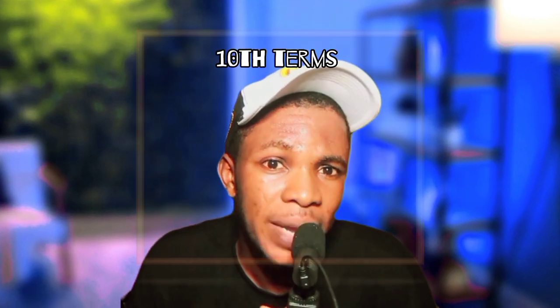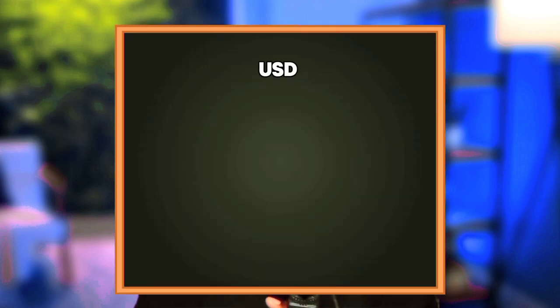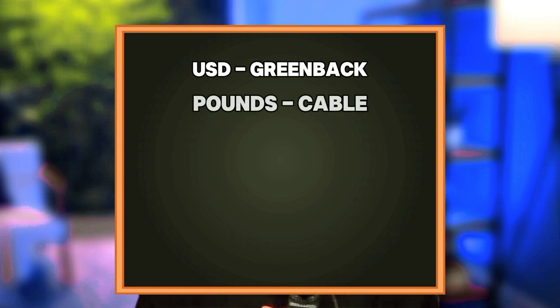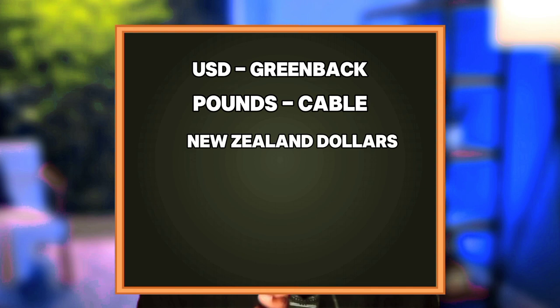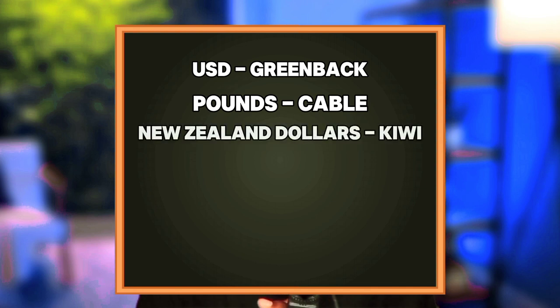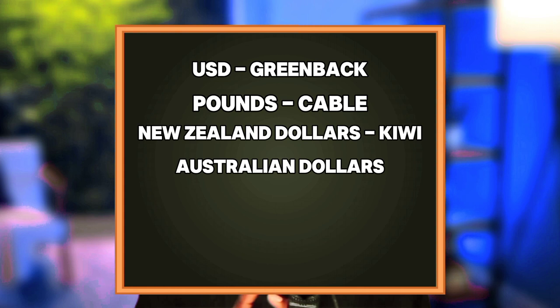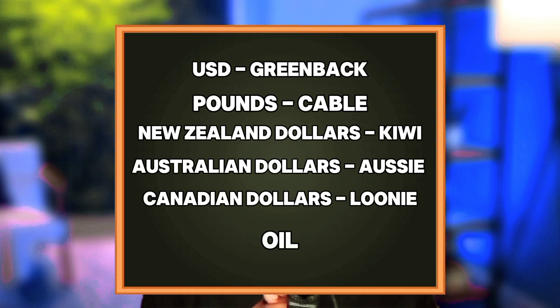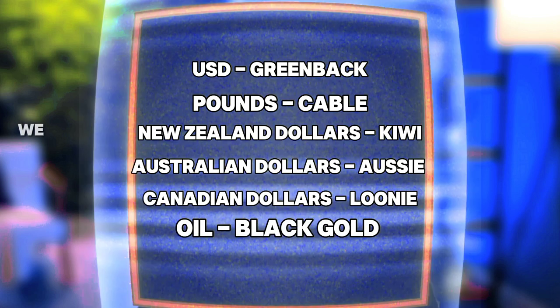Most currency pairs have specific nicknames they are commonly referred to. For example, the U.S. dollar is sometimes called the greenback, the British pound is known as the cable, the New Zealand dollar is called the kiwi, the Australian dollar is referred to as aussie, the Canadian dollar is called the loonie, and oil is referred to as black gold. We will explore more of these currency pair names as we progress with the training.